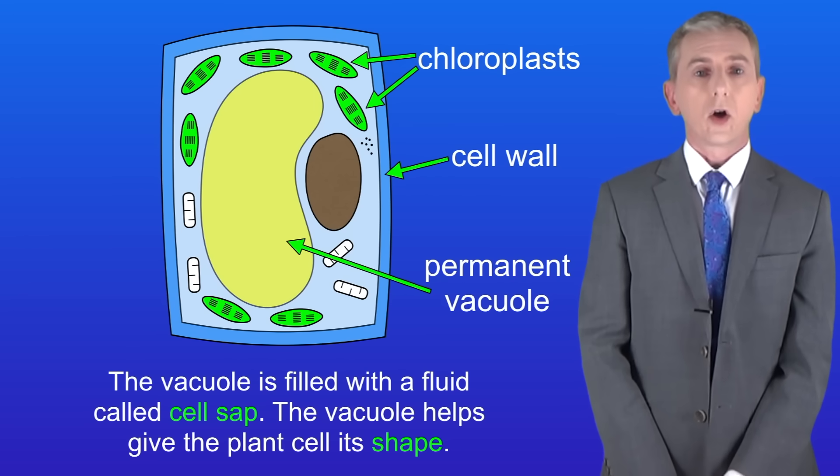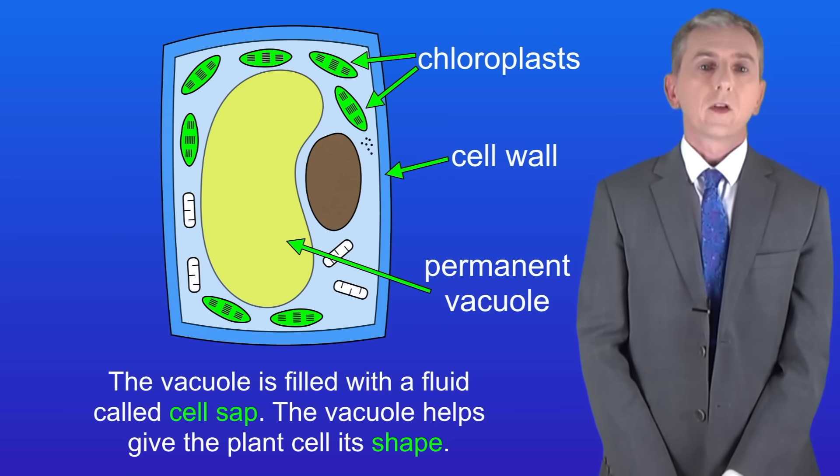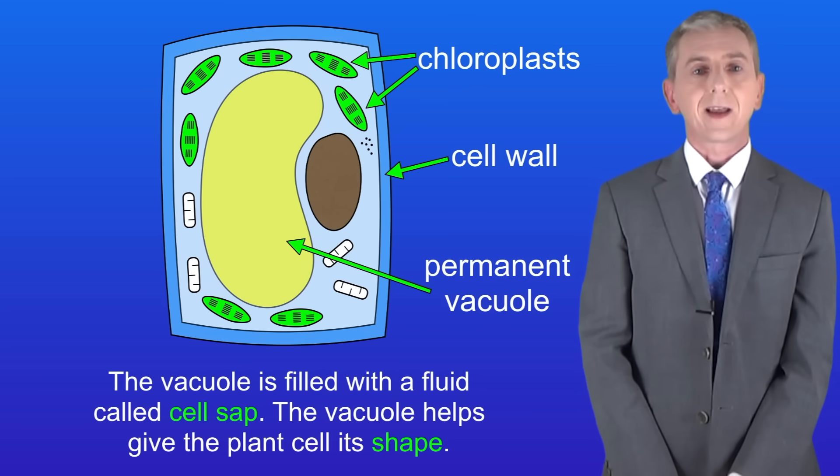Finally, plant cells also contain a large permanent vacuole. The vacuole is filled with a fluid called cell sap. Because it's packed full of fluid, the vacuole helps give the plant cell its shape.